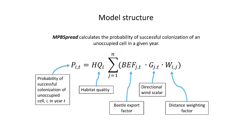For more detail on model structure: it calculates the probability of successful colonization of an unoccupied cell in a given year. The key term is P-I-T — the probability of successful colonization of cell I in year T — calculated as a function of habitat quality, a beetle export factor, the directional winds east of the Rockies, and a distance weighting factor to account for the vagaries of dispersal over a landscape.